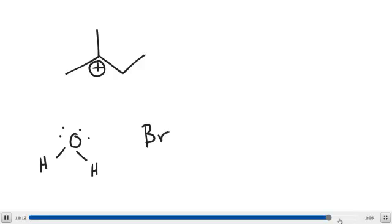One of the things that can happen is that water could act as the nucleophile and add to this carbocation. It is a potential nucleophile because it is an electron pair donor. Bromide is also a potential nucleophile because it also has lone pair electrons. Either one of these two chemical species could add to this carbocation.